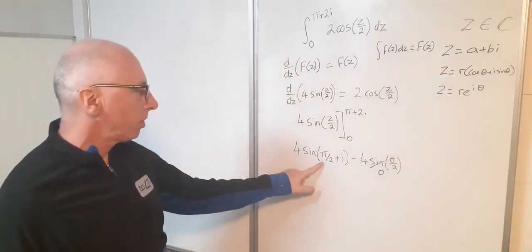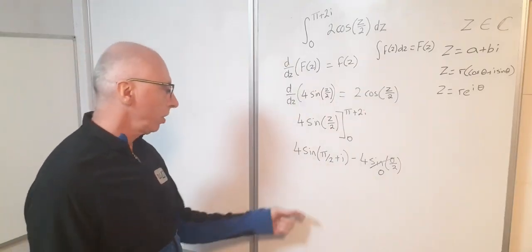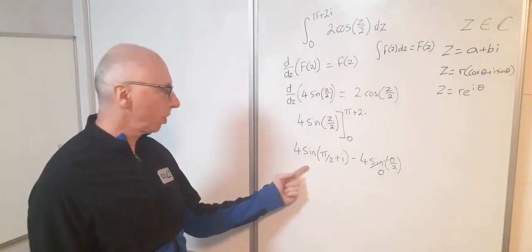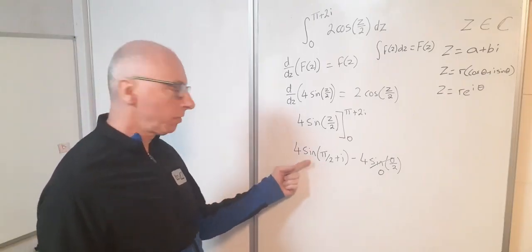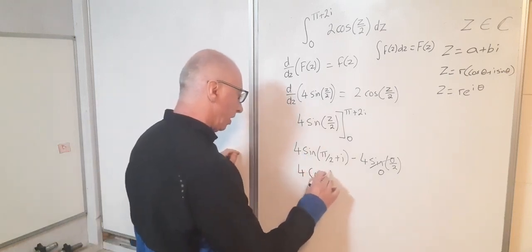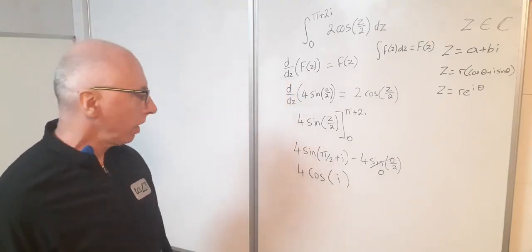Here 4 times sine of pi over 2 plus i. Well we know the sine function is the same as the cosine function but shifted by pi over 2. So therefore my result for this could be 4 cosine of i minus 0. Well that's just as it is, so 4 cosine of i.